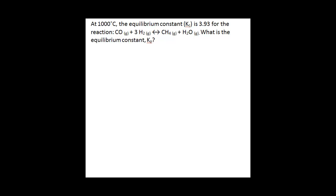Hi, this is Sonia Doucette. In this video, I'll show you how to calculate Kp from Kc and vice versa. The problem we're dealing with here is as such: at 1,000 degrees Celsius, the equilibrium constant Kc is 3.93 for the reaction carbon monoxide gas plus hydrogen gas gives you methane gas and water as a gas. What is the equilibrium constant Kp?